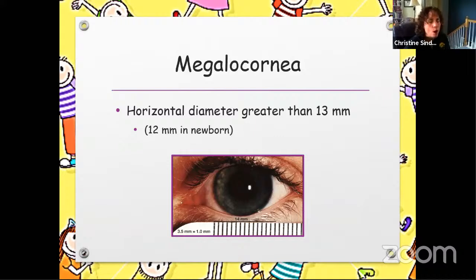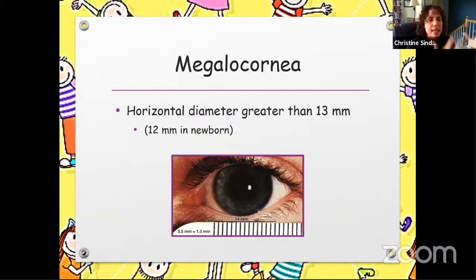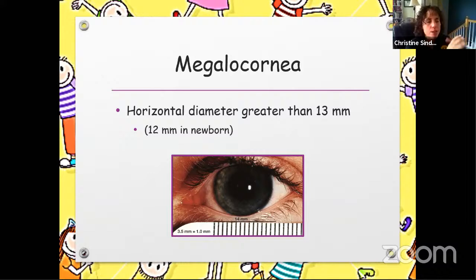Megalocornea is probably less common than microcornea, at least in my population. This would be a child that has greater than a 13 millimeter cornea, frequently associated with high myopia. The most common problem I see is people try to fit them in just a standard soft contact lens, and that is not appropriate. You have to go to a custom lens here — measure the iris diameter and choose a contact lens appropriate for the size of the eye. Typically you're going to be looking at greater than 15 millimeters — usually 16 and maybe even 17 millimeters. A standard 14 to 14.5 millimeter lens is not going to fit these patients.